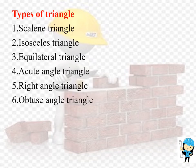First we are going to see the types of the triangle. What are the types of triangles? There are 6 types of triangle: scalene triangle, isosceles triangle, equilateral triangle, acute angle triangle, right angle triangle, and obtuse angle triangle.